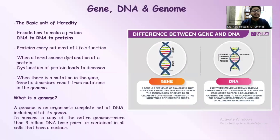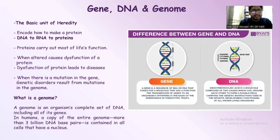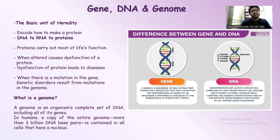First of all, what is a gene? A gene is a basic unit of our heredity. It encodes how to make proteins — DNA is transcripted to RNA, and RNA is then translated to protein. Proteins carry out most of our life functions. When an alteration causes dysfunction in a protein, that dysfunction leads to diseases. When there is a mutation in the gene, a genetic disorder occurs.